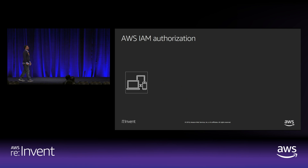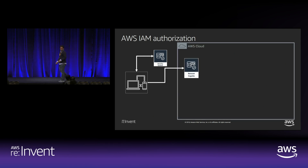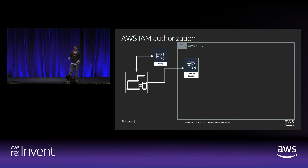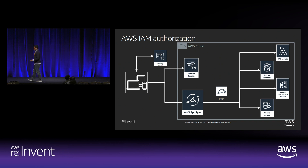If you're using IAM — for example with a SAML provider or custom token mechanism — the mobile client calls that identity system, gets the token, and then uses Amazon Cognito or Amazon STS to federate that token into AWS. Once federation succeeds, Cognito or STS returns an access key and secret. You use those along with region and domain information to SigV4-sign the request to AWS AppSync, which validates the SigV4 signature and makes a call to the underlying data source by assuming an application role.